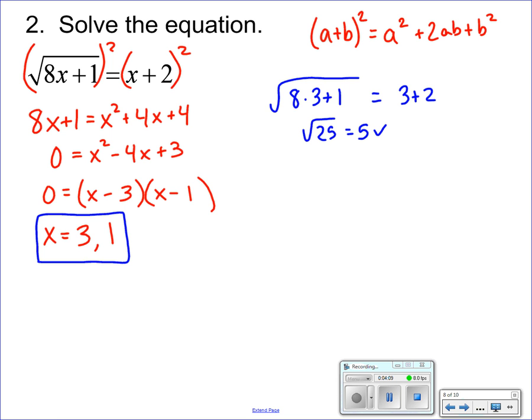Then we want to try 1. √(8×1+1), does that equal 1 + 2? √9 equals 3, so that also works.